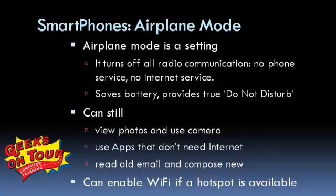So that's a little bit of understanding about smartphones and airplane mode. Airplane mode is a setting — it turns off all radio communications, no phone service, no internet service. It saves battery and provides a true do-not-disturb while you're still able to use your phone as a camera, photo viewer, and any apps that don't need internet. You can read email, compose new, and you can still enable a Wi-Fi hotspot.